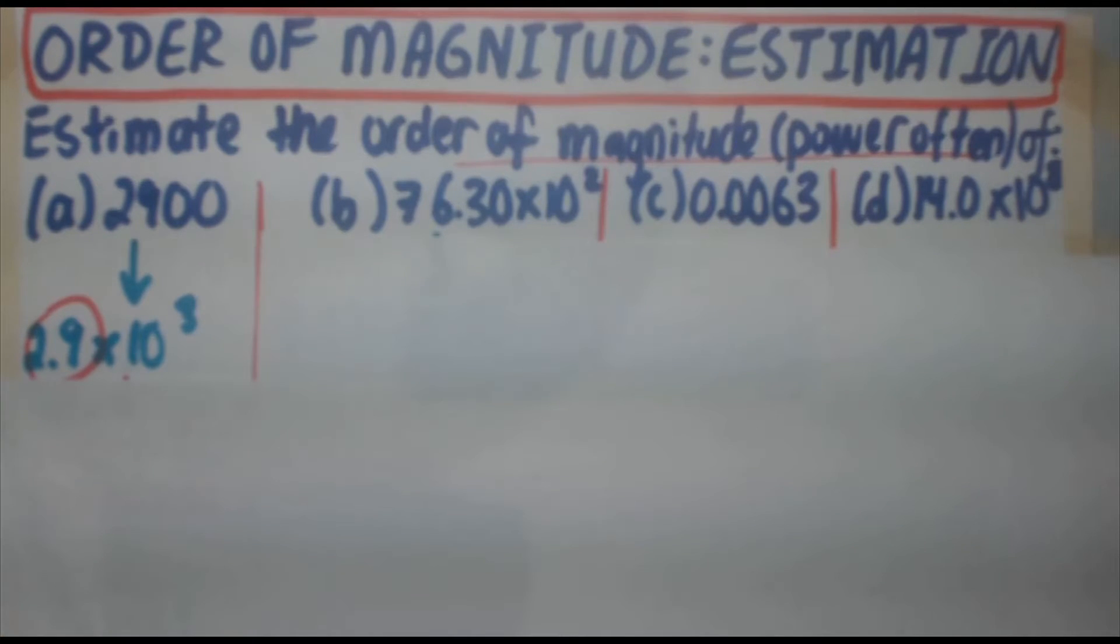So whether it's 10 to the 3 or 10 to the 2 or 10 to the 7, that tells you the factor or the scale of which how big that number is. So in this case, you might say, oh, it's already given to us. It's 10 to the 3.